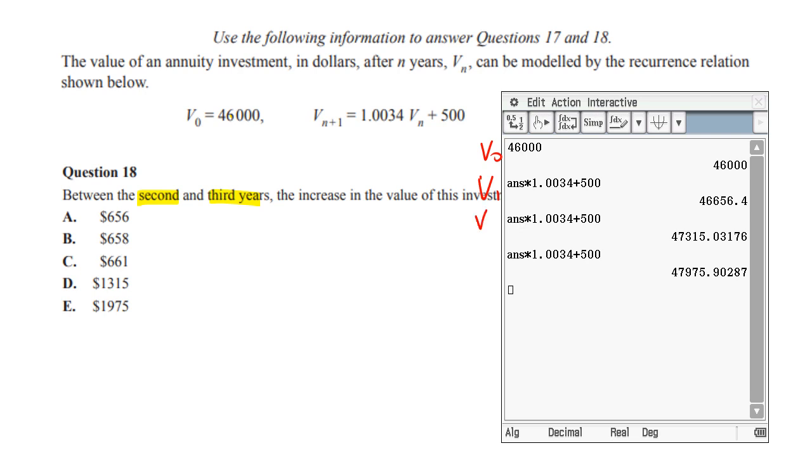If we want between the second and third years, we want the difference between those two numbers. So you just do a little subtraction and you get 660.87, which is 661 dollars. So for question 18, the answer is C.